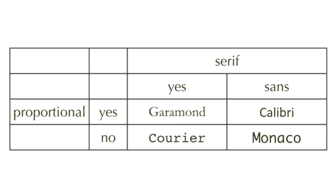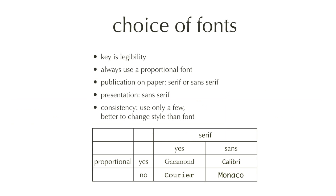The other choice you have to make is whether you are going to use serif or sans-serif fonts. The serif is the small line at the end of each letter — you can see this in Garamond — and those lines are absent in Calibri, which is a sans-serif font. Usually for publication we use serif fonts because they read very nicely, but for presentations we use sans-serif fonts because they are more clear on screen.